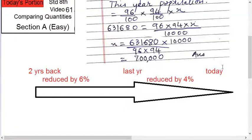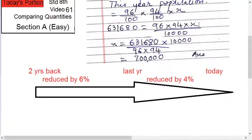Today's population is given — that is 631,680. So what we do now is equate today's formula to the given today's population. That is 631,680 equals 96 upon 100 into 94 upon 100 into X. Combining the denominators, 100 × 100 becomes 10,000.